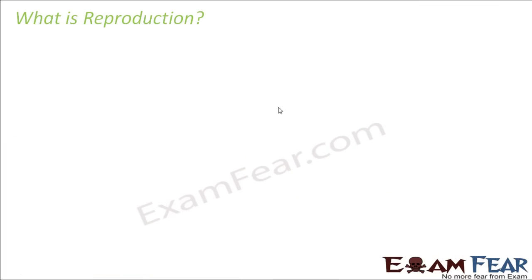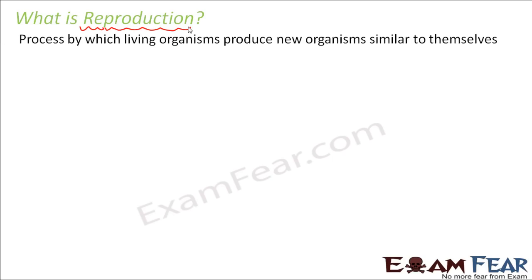Let us start from the basics. What is reproduction? The prefix 're' means something which happens again — for example, rewrite means write it again, repeat means say it again, rewind means wind it again. So reproduction: 'production' means to produce or form something, so reproduction means to produce the same organism again. It is the process by which living organisms produce new organisms similar to themselves. Since we produce similar types of organisms over and again, it is called reproduction.